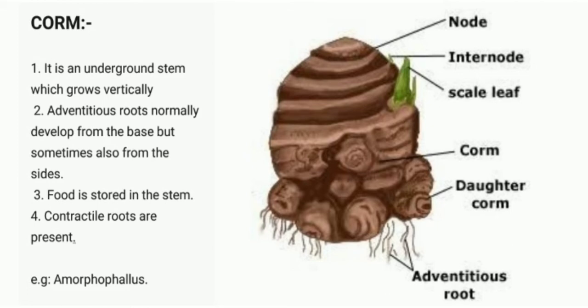The example is Amorphophallus. On the screen you can see the image of Amorphophallus. It has nodes, internodes, scale leaf, corm, daughter corm, and adventitious roots at the base.